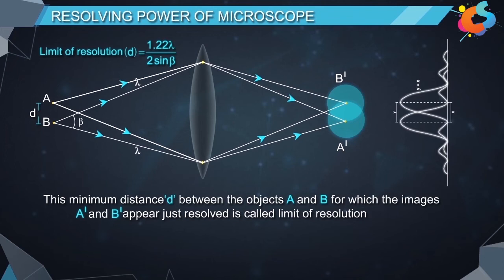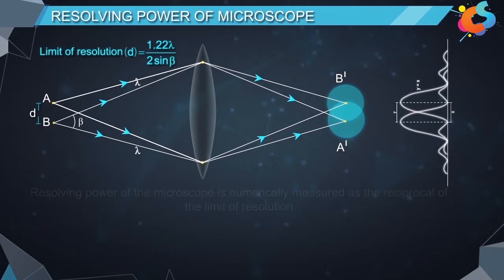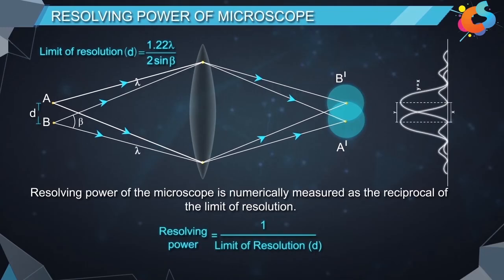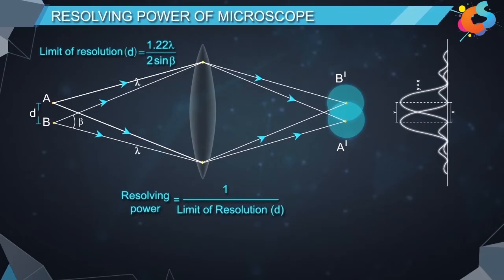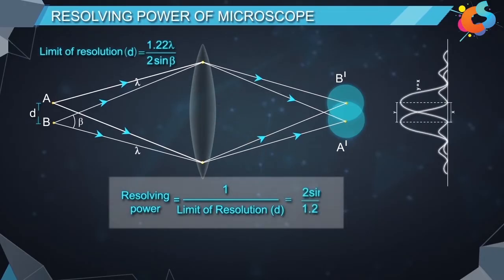This minimum distance D between the objects A and B for which the images A' and B' appear just resolved is called limit of resolution. The resolving power of the microscope is numerically measured as the reciprocal of the limit of resolution. Therefore, resolving power is equal to 1 by D which is equal to 2 sin beta divided by 1.22 lambda.